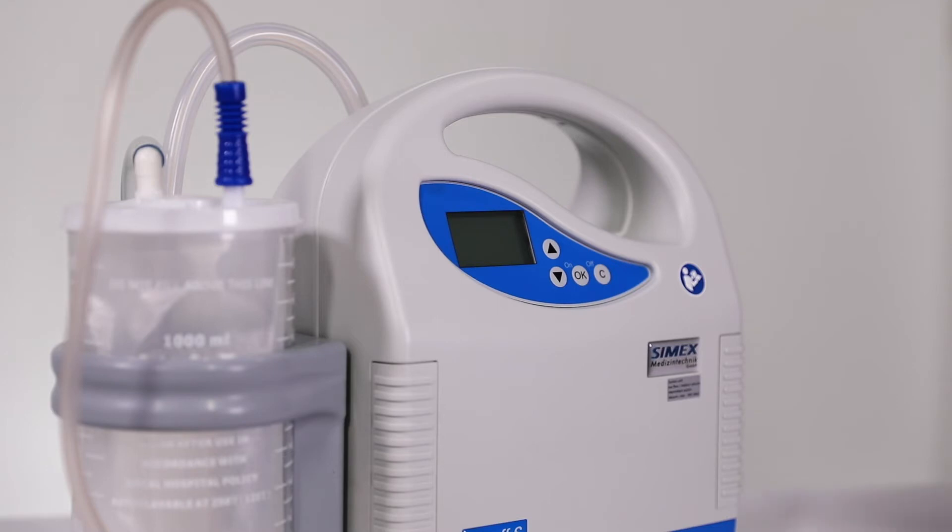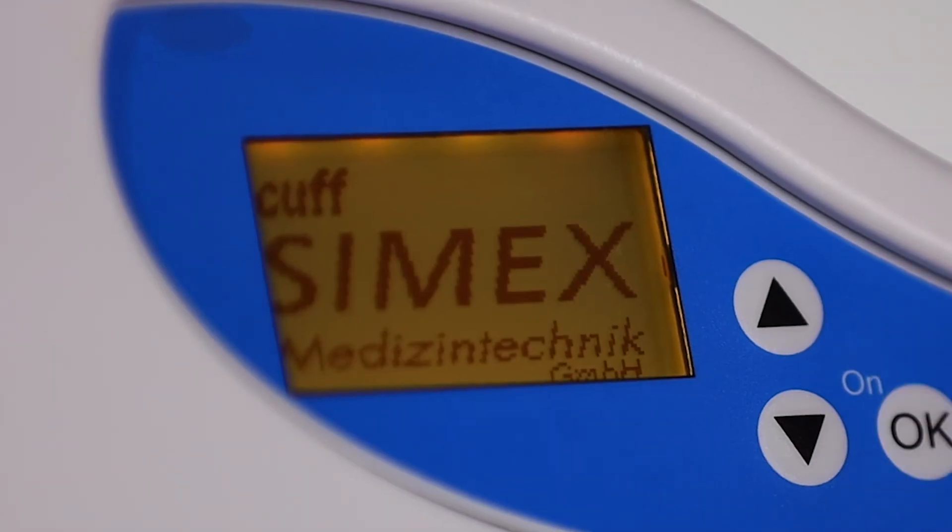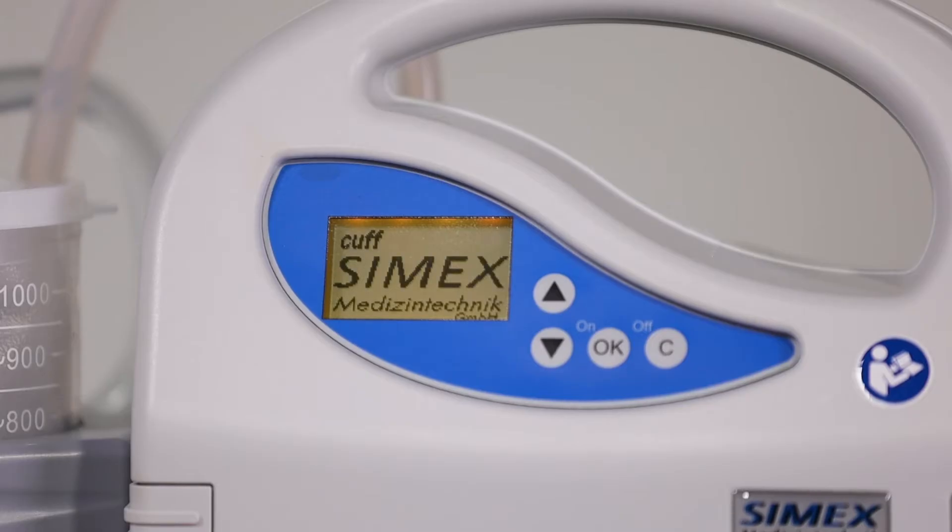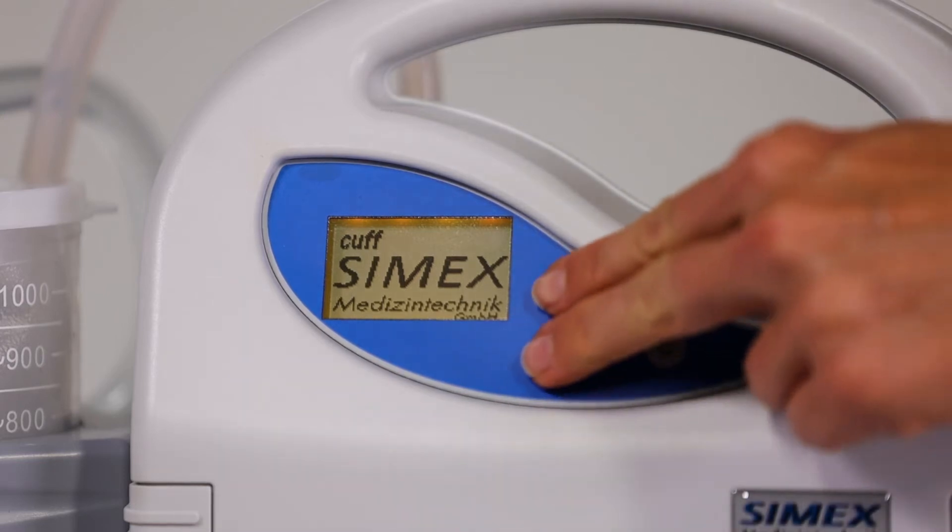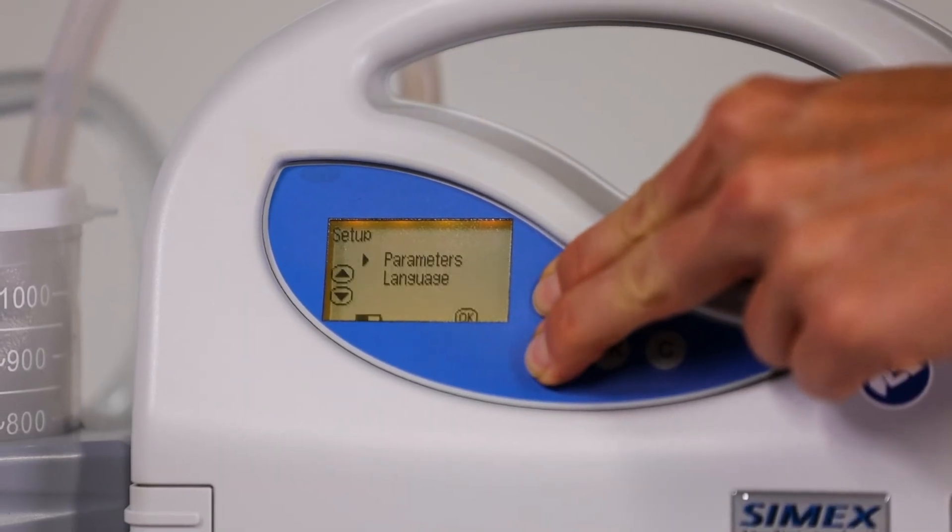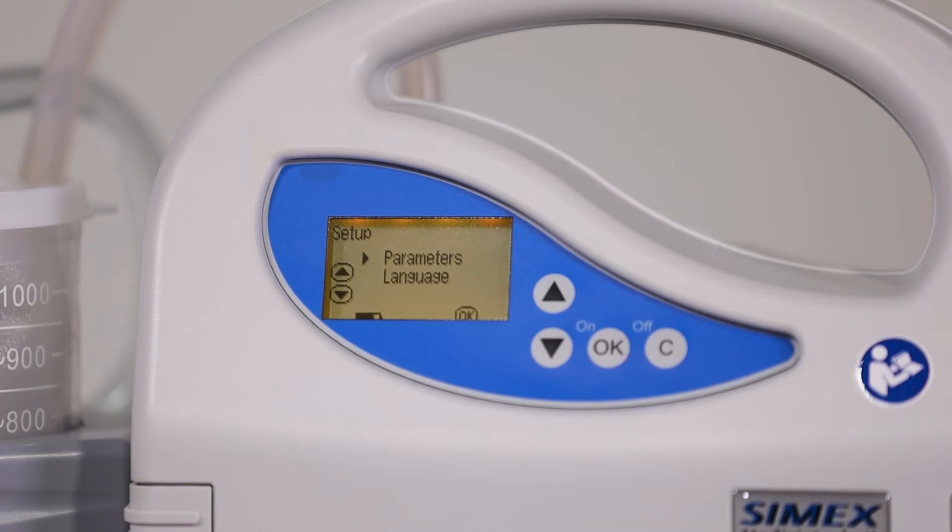Press and hold the OK button for 2 seconds to turn the pump on. Once on, within 5 seconds, immediately press both the up and down arrow buttons simultaneously to access the setup mode.